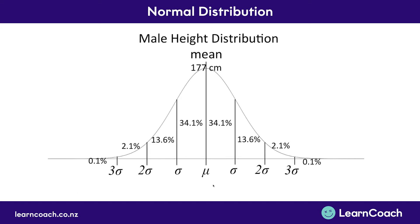Now if all of these numbers aren't quite making sense, that's okay. We'll look at an example with a male height distribution. For example, if one standard deviation of height was 4 centimeters — so from 177 down to 173 — that would mean 34.1% of the male population would be between 173 and 177 centimeters. It also means half the population is below 177 and half is above 177. Two standard deviations would be 8 centimeters, so another 13.6% of the population would be between 173 and 169 centimeters. Another 4 centimeters gives 2.1% between 169 and 165 centimeters, and 0.1% of males would be below 165 centimeters.